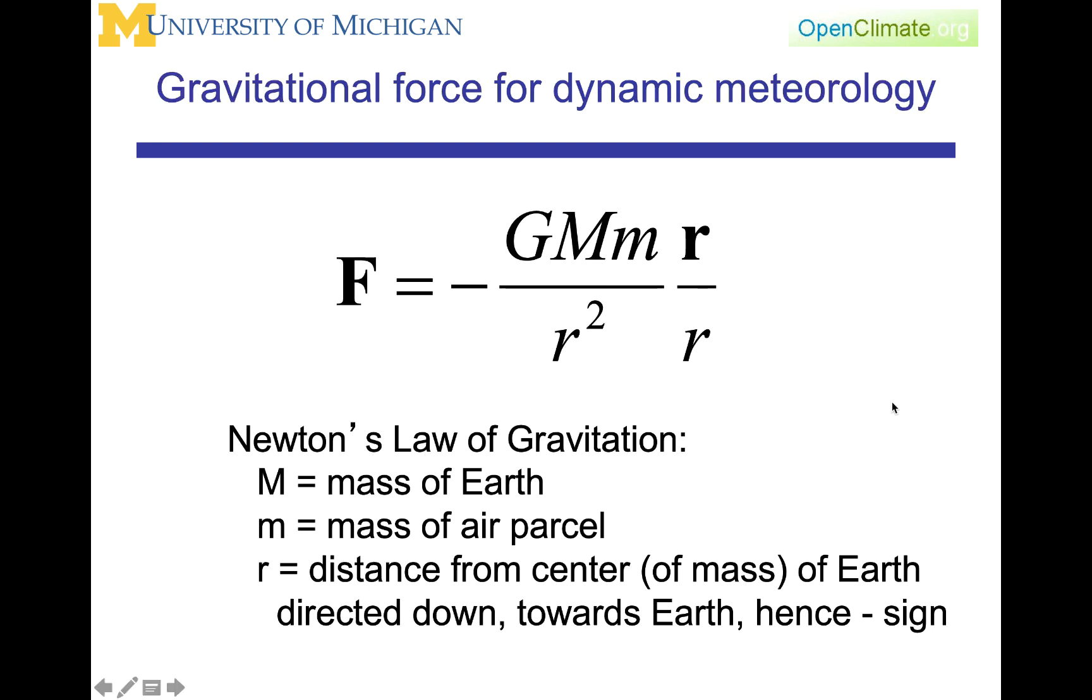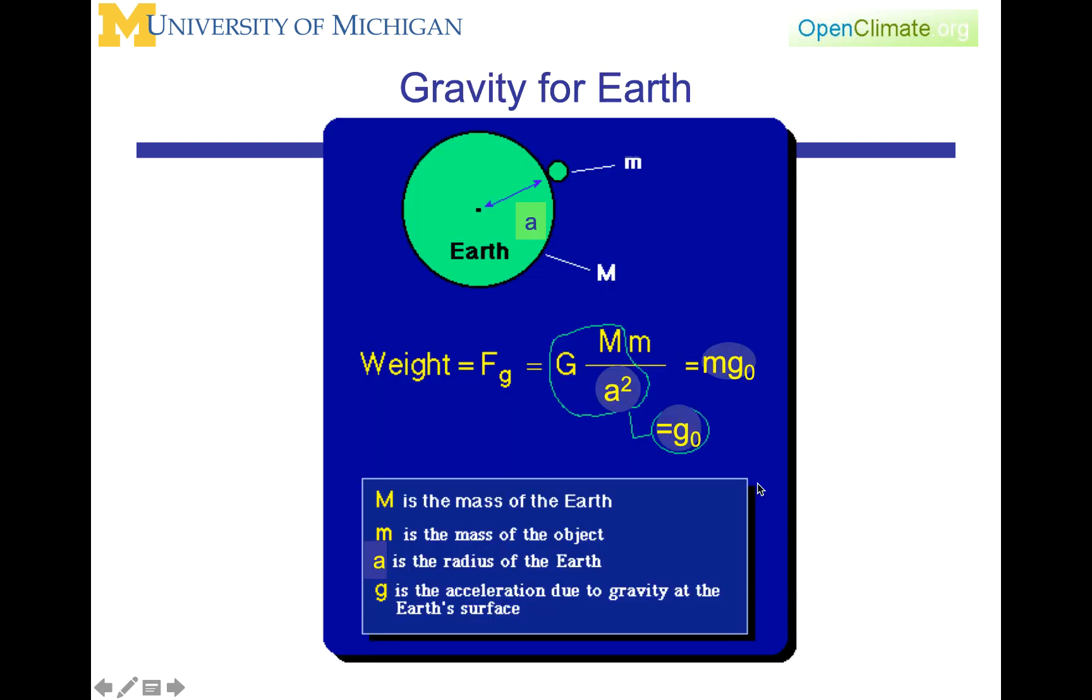Specifically within dynamical meteorology, the big M here is the mass of the earth. So one of the masses that we are considering is the earth itself, and the other is m, the mass of our air parcel. r is the distance from the center of mass of the earth directed down towards the earth, hence the negative sign. So our convention will be that the earth is pulling the atmosphere towards it. Schematically, this is what this looks like. Here is the earth, the earth's radius we will by convention use a. Here is the mass of our small parcel in the atmosphere. The earth's mass is the big M, the particle mass is the little m.